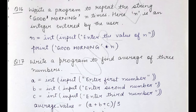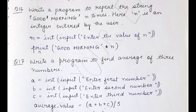Starting with Question 16: you have to write a program to repeat the string 'Good Morning' n number of times, where n is given as an integer input by the user. You will accept n as input, convert it to the int data type, and then use the value of n to repeat the string 'Good Morning' by multiplying it with n. Multiplication here is an overloaded operator, performing concatenation of the string with itself n number of times.